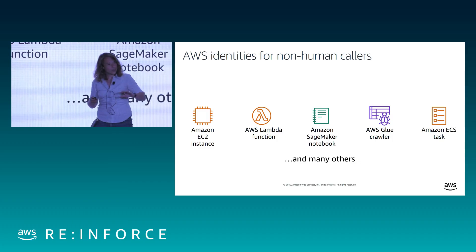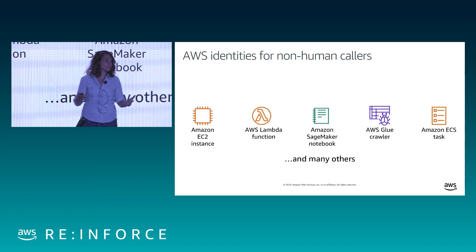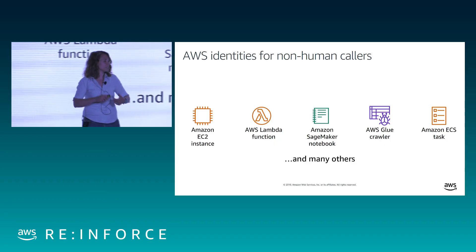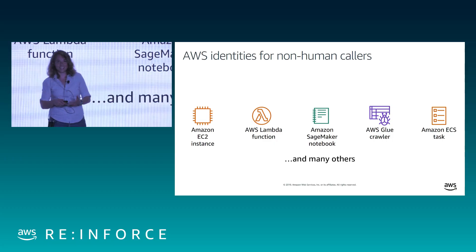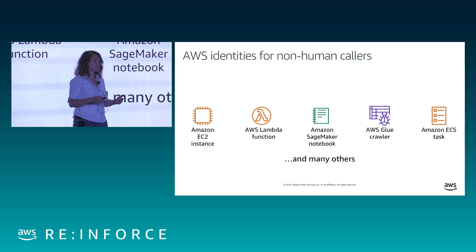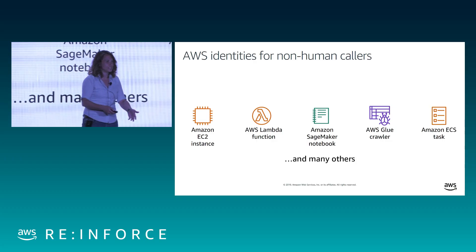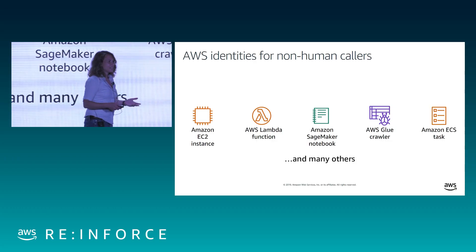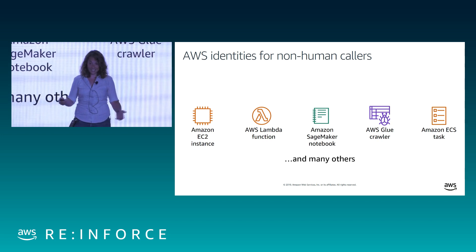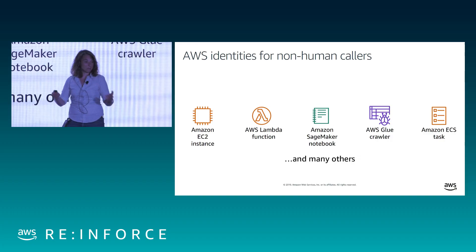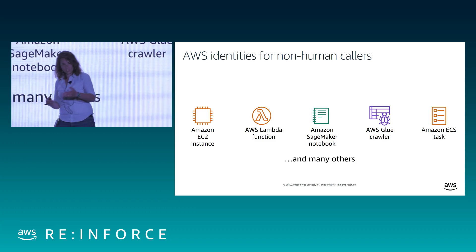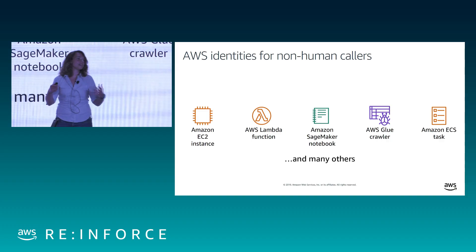There are also IAM roles for applications. A large number of AWS services — especially various compute environments like EC2, Lambda, ECS, and many others — can themselves have IAM identities. Because if you're running a serverless application on Lambda or an application on EC2, nearly everything you do is going to be making API calls against AWS services and will need an identity to be authenticated. So that's another kind of identity in AWS — an IAM role, an IAM principal, but an identity for non-human applications.